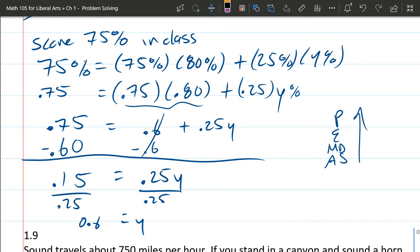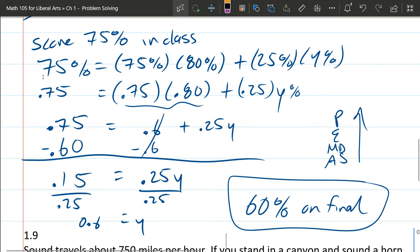Alright, they want a percentage though. So don't write 0.6. That is 60% on the final exam to get 75% in the class.